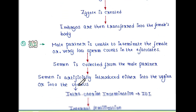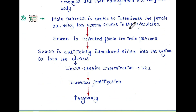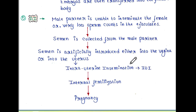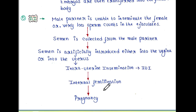Next process is AI. Here again the male partner is unable to inseminate the female or has very low sperm counts in the ejaculate. In this case, the semen is collected from the male partner and is artificially introduced either into the vagina or into the uterus — this process is known as Intrauterine Insemination or IUI. Internal fertilization then occurs inside the woman's body and pregnancy occurs.